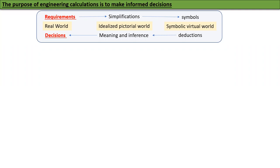This is the role of mathematics. The symbols and manipulation and logic is the role of mathematics. The role of the interface world is simplification, and the decisions and requirements come from the real world. This is how engineering works.